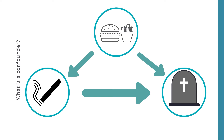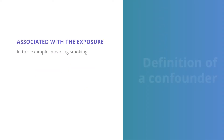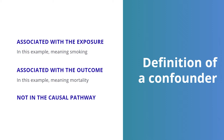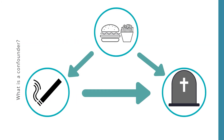So what is the formal definition of a confounder? A confounder is a factor that is associated with the factor that you're studying — in this example, that would be smoking. It is also a factor that is associated with the outcome, which is in this example mortality. But the factor should not lie in the causal pathway. Coming back to our example in which dietary habits are a confounder for the association between smoking and mortality, you can imagine that there are certain steps between the factor smoking and the actual mortality.